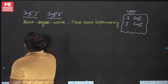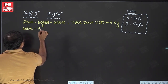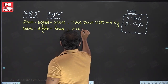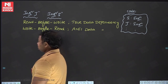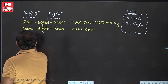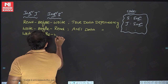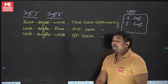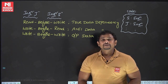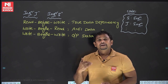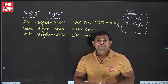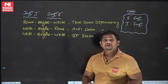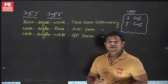Read-before-read is not a dependency — the value will be the same regardless of order. Read-write is an issue, write-read is an issue, and write-write is an issue. These issues are called true data dependency, anti-dependency, and output dependency. True data dependency exists in in-order execution, meaning we check adjacent instructions. Anti-dependency and output dependency are possible with out-of-order execution, i.e., instruction scheduling.